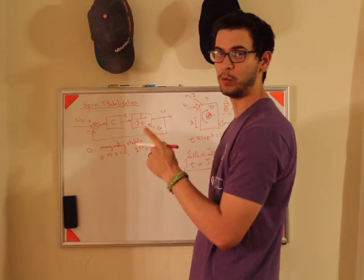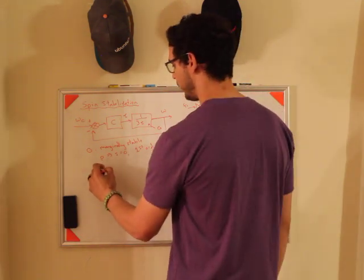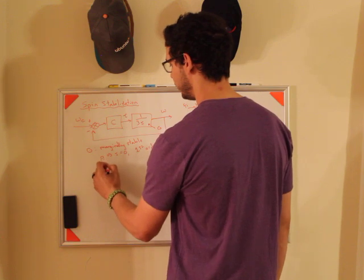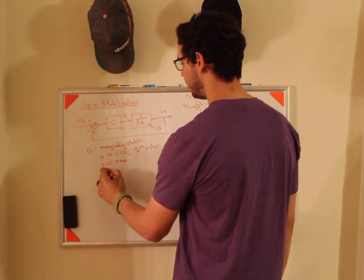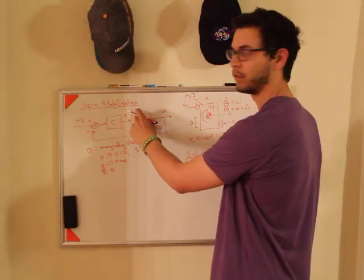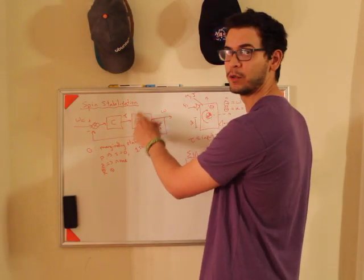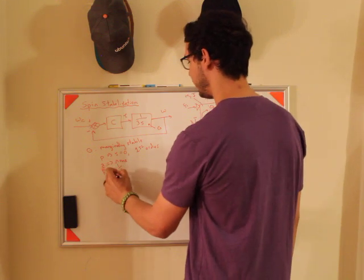And the numerator is just a one. So that means that there are no zeros. So there are no zeros. And then the gain is the leading coefficient of the numerator divided by the leading coefficient of the denominator, which is just one third. So that's the gain.